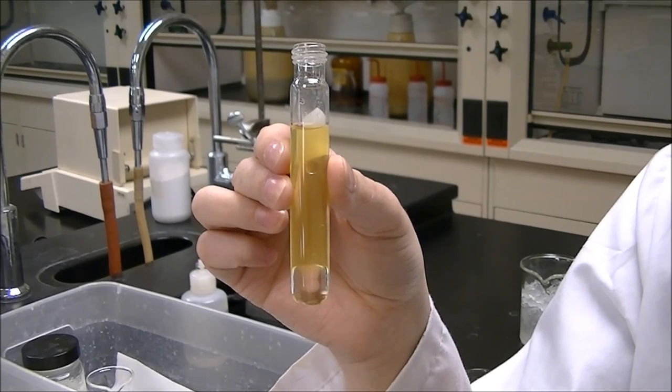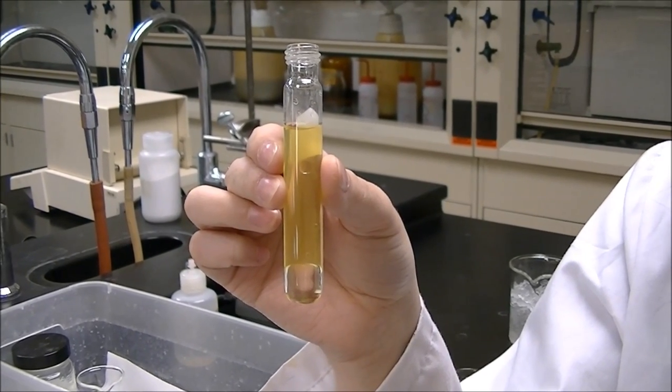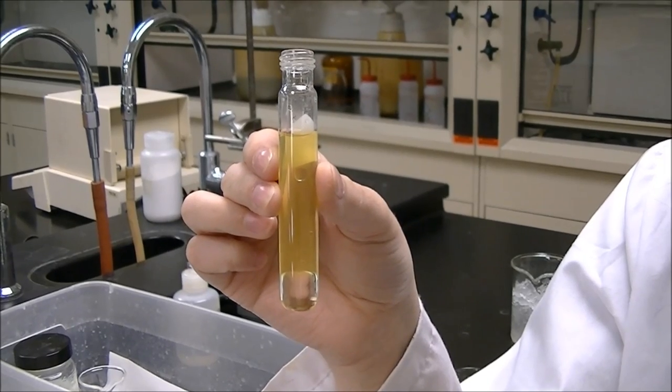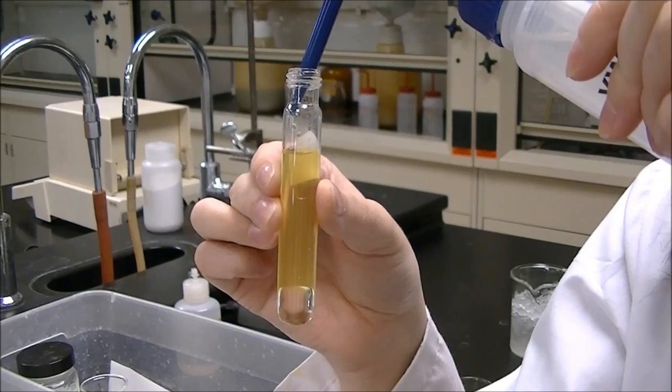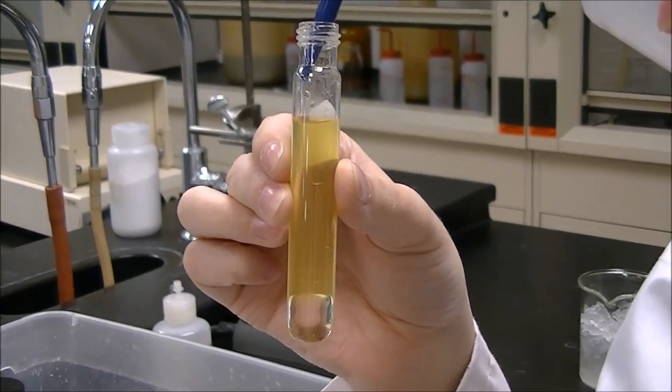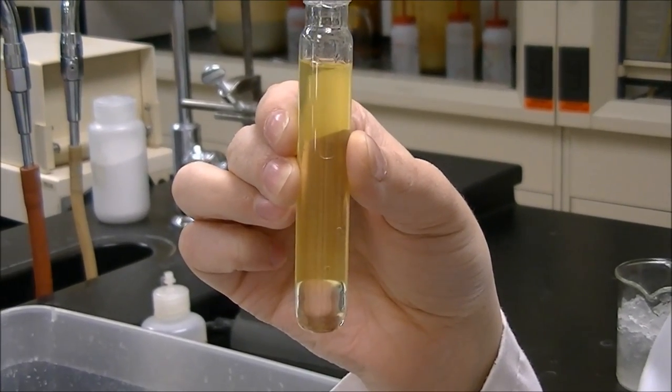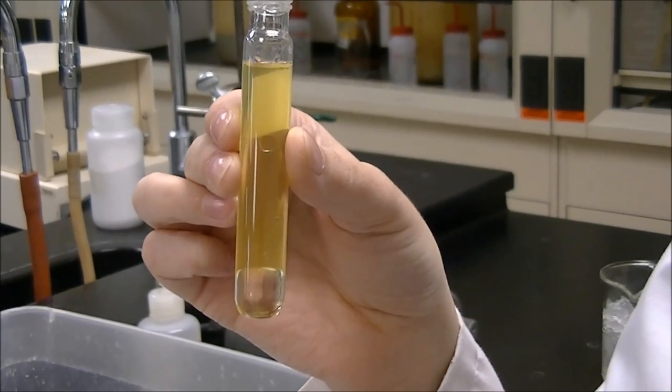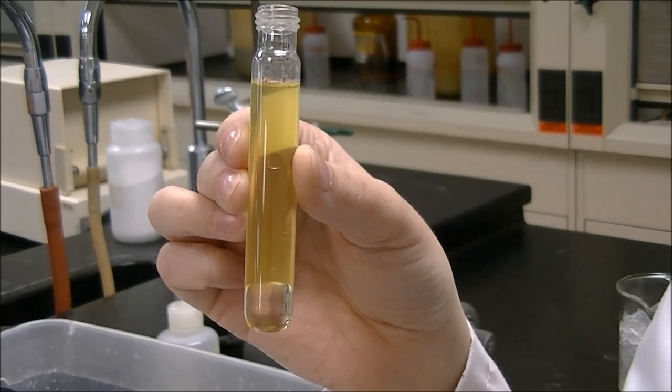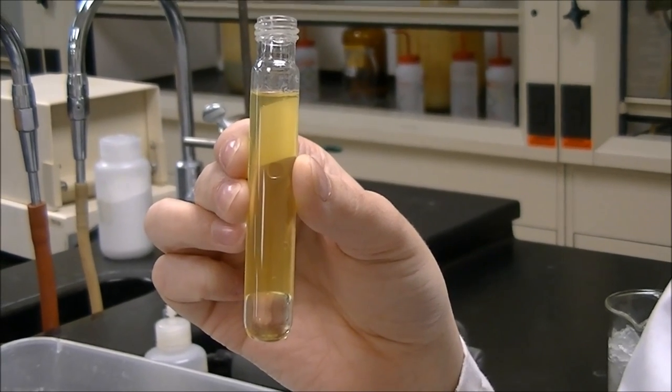If you had the densities of the two solutions, you could figure that out, but you actually don't even need that. What we're going to do is we're going to add some water, and whichever phase grows in size is the aqueous layer. You'll see that that yellow layer is getting taller, but that layer at the bottom is not. So the bottom layer must be the organic layer, and that's the one that we're going to pipette out.